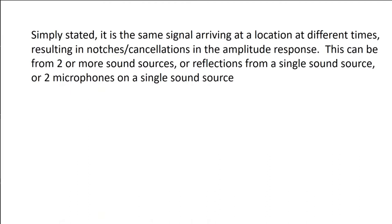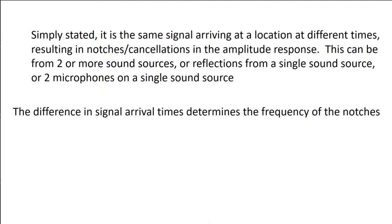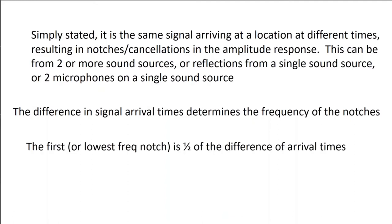The difference in signal arrival times determines the frequency of the notches. The lowest frequency notch is going to be one half of the difference of the arrival times. The subsequent notches will be at multiples of the arrival time difference. When you look at it on a linear scale, the notches look like the teeth of a comb — hence the reason it's called comb filtering. We live in a logarithmic world, so we view things a bit differently, and I'll show you that on the logarithmic scale.